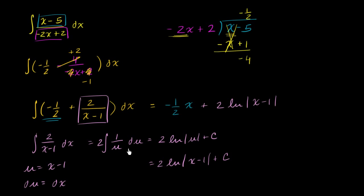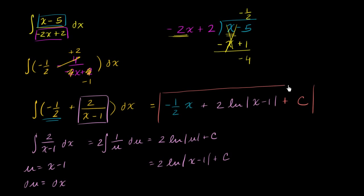And the plus c doesn't just come from this one term — in general, when we're taking the integral of the whole thing, there could be some constant, because obviously if we take the derivative the constant will go away. So our final answer is negative one half x plus two times the natural log of the absolute value of x minus one, plus c. And we are done.